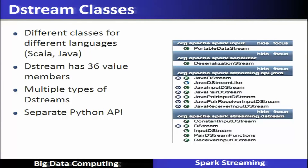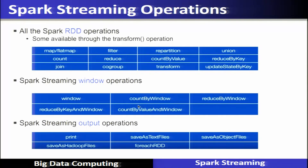DStream classes support different languages — Scala and Java. DStream has 36 different value members, multiple types of DStreams, and a separate Python API. Spark streaming RDD transformations include map, flatMap, filter, repartition, union, count, reduce, countByValue, reduceByKey, join, cogroup, transform, and updateStateByKey. Window operations include window, countByWindow, reduceByWindow, reduceByKeyAndWindow, and countByValueAndWindow. Output operations include print, saveAsTextFiles, saveAsObjectFiles, saveAsHadoopFiles, and forEachRDD.